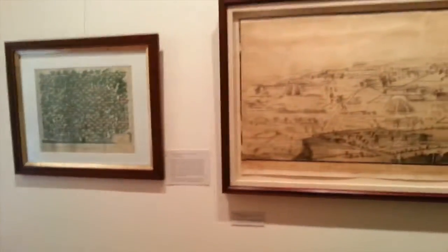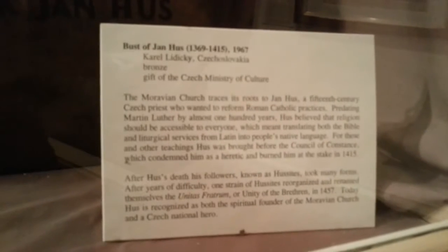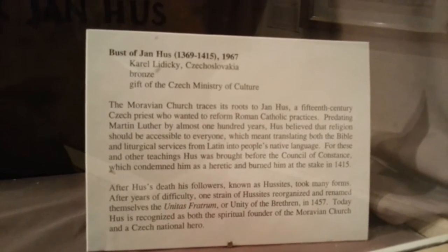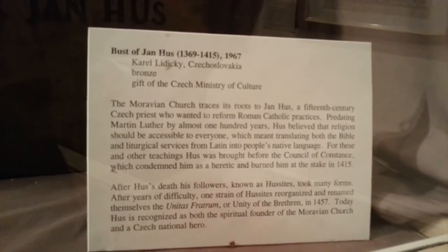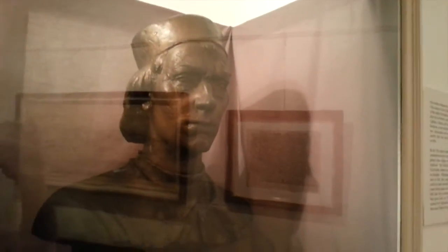This is the first gallery space. Over here we have John Huss, who was a Catholic priest in the 1300s and 1400s. Pause the video if you want to read about him, but he is where the Moravian church can trace its roots back to.